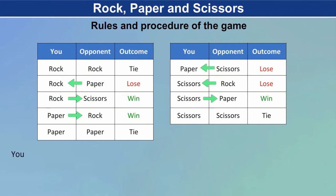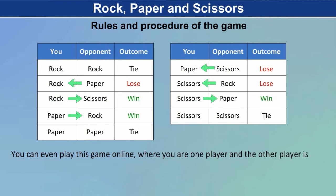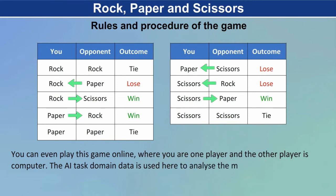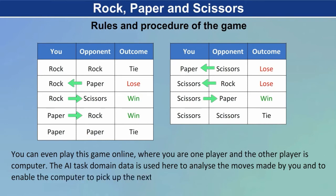You can even play this game online, where you are one player and the other player is the computer. The AI task domain of data is used here to analyse the moves made by you and to enable the computer to pick up the next move.